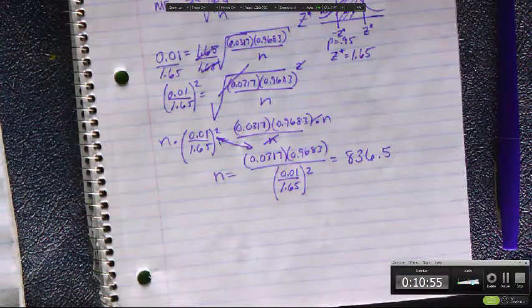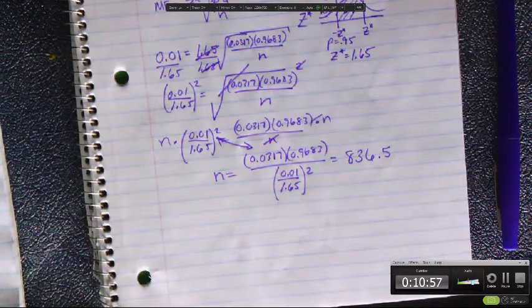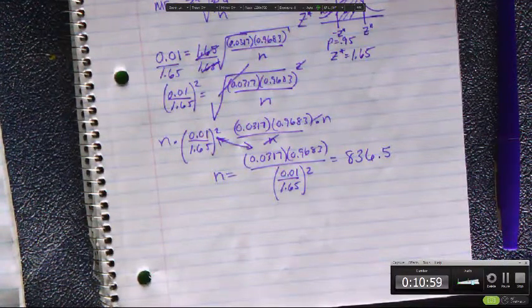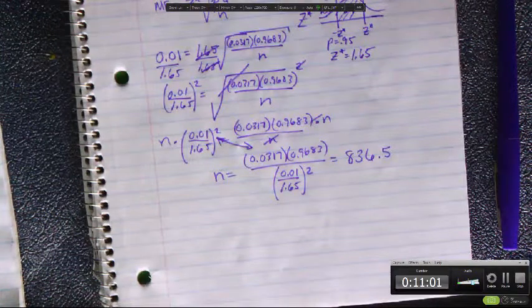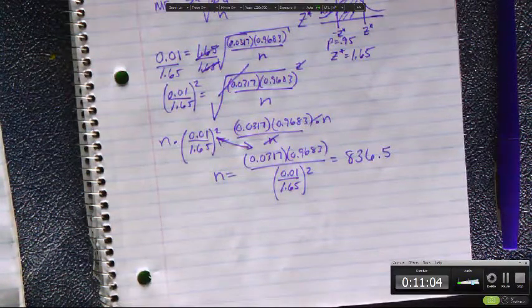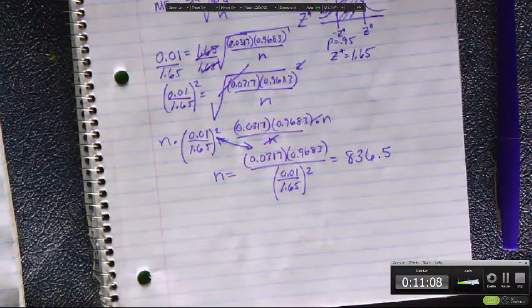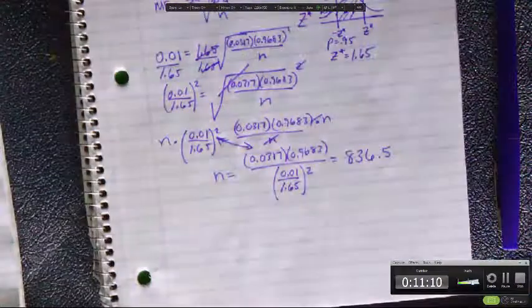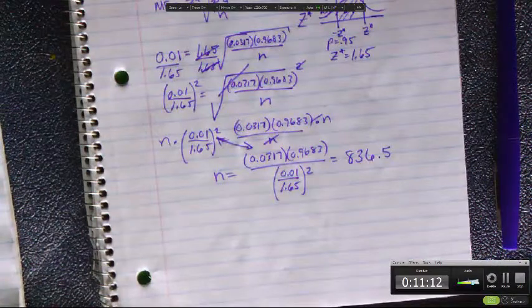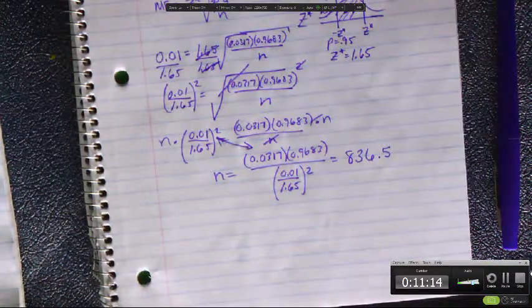So n is 836.5. To guarantee you're accurate within 1% of the actual, you have to ask 836.5 people. The two up top, can you go ahead and multiply both out? You could, and then I rounded it up, which is why you got something slightly different. The more rounding you do along the way, the more off. It's called propagation error.